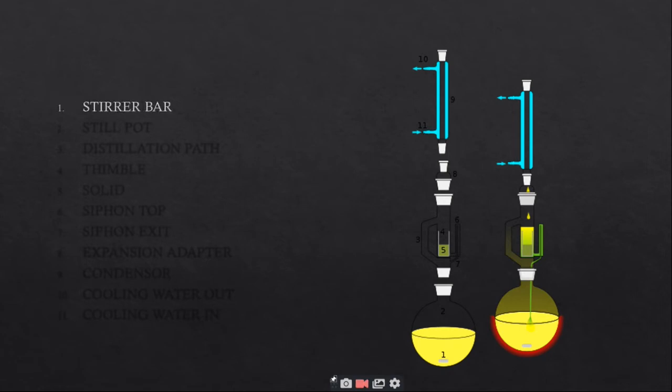Number one is stirrer bar in yellow color. Number two is still pot. Still pot should not be overfilled and volume of solvent should be three to four times the volume of Soxhlet chamber.